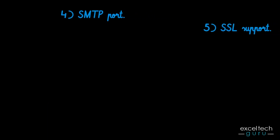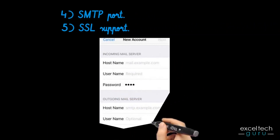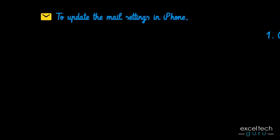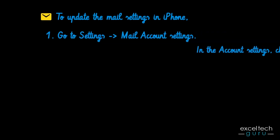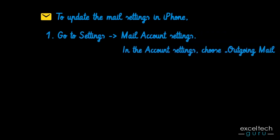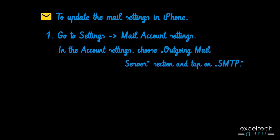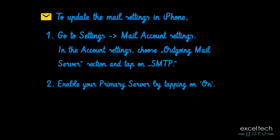Other parameters include SMTP port, and SSL support. To update the mail settings in iPhone: one, go to Settings; two, go to Mail, then Accounts. In the account settings, choose the outgoing mail server section and tap on SMTP to enable your primary server.